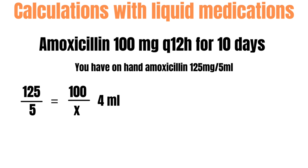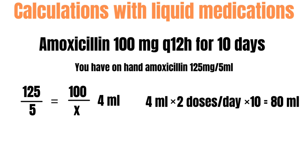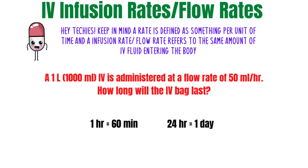Amoxicillin comes in different bottle sizes — 50 mL, 100 mL, 150 mL, and possibly 175 mL. We want to choose the right size to avoid wasting medication. So we calculate: 4 mL times 2 doses per day (since she takes it every 12 hours, that's 24 ÷ 12 = 2 doses daily) times 10 days equals 80 mL total. So we'd dispense it in the 100 mL bottle.